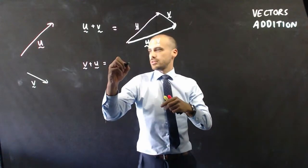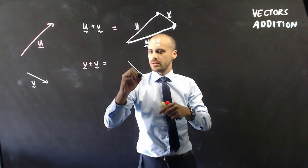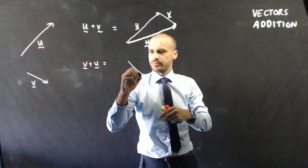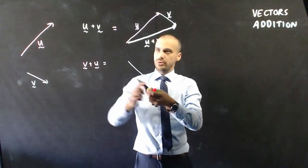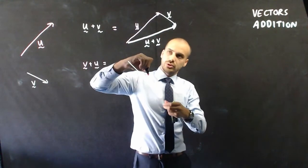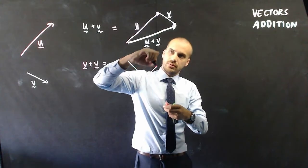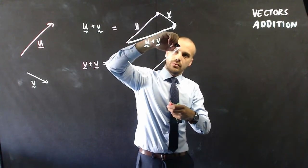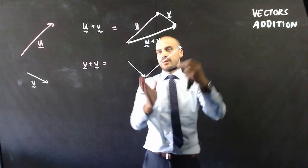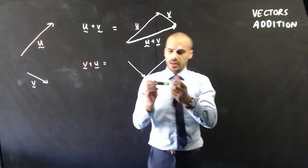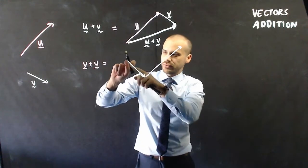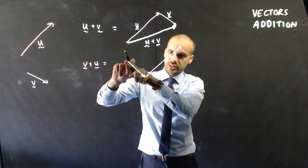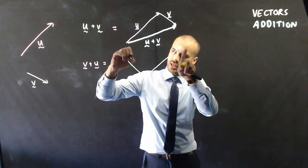So, v first, it should be straight, and then u, which should look something like this. We're getting close, okay. And then, adding the vectors is just taking the tail of the first vector and joining it to the head of the second vector.